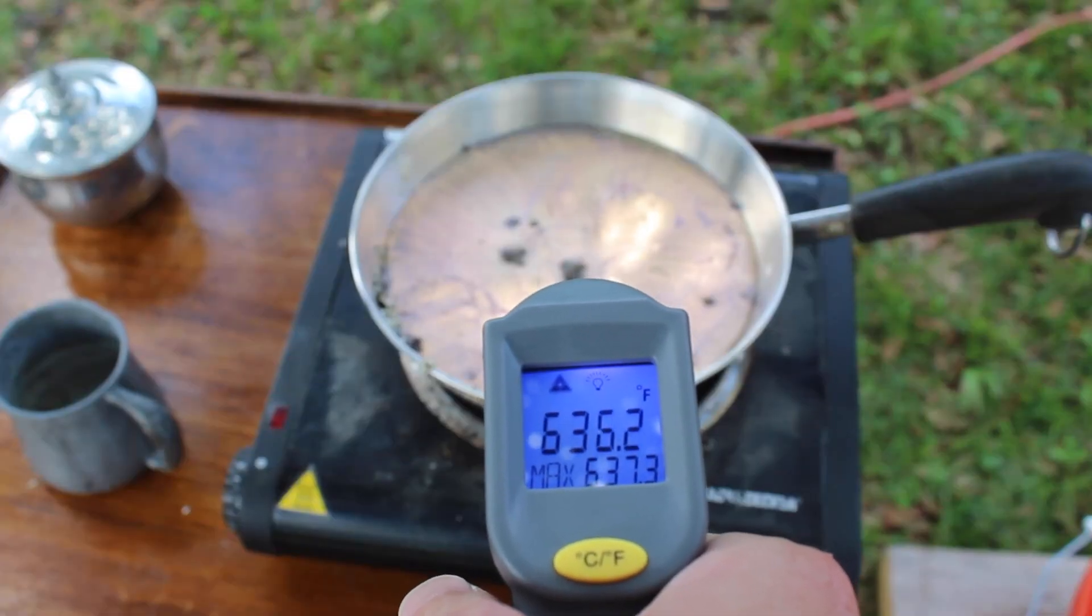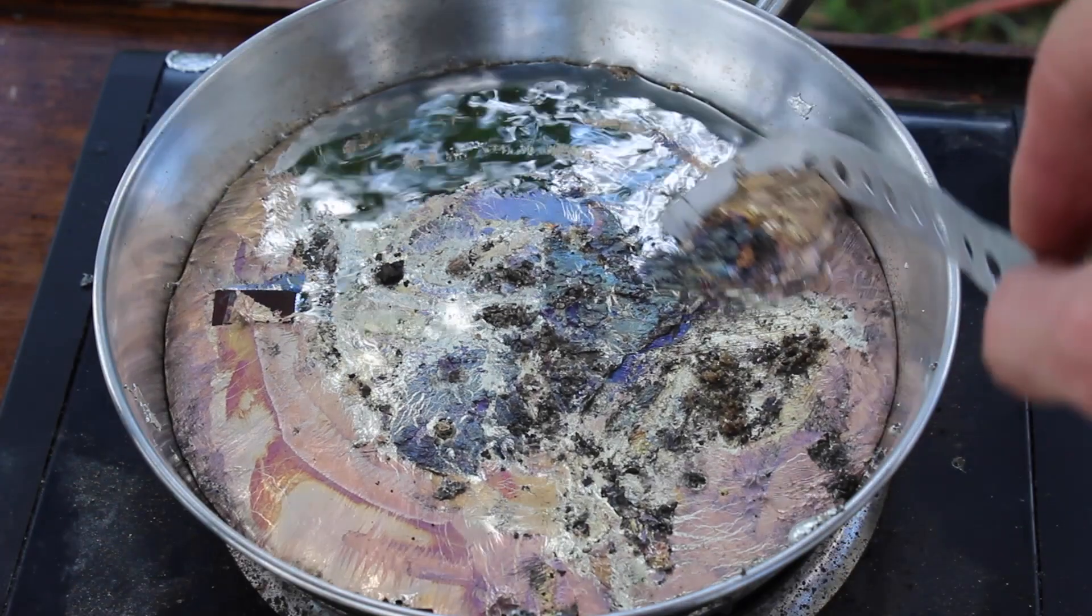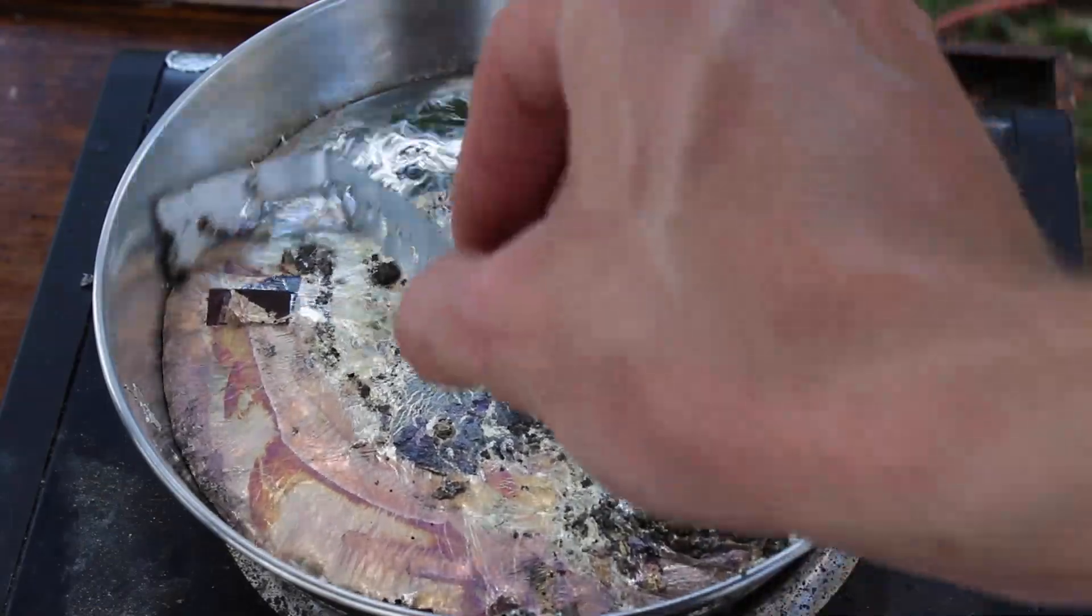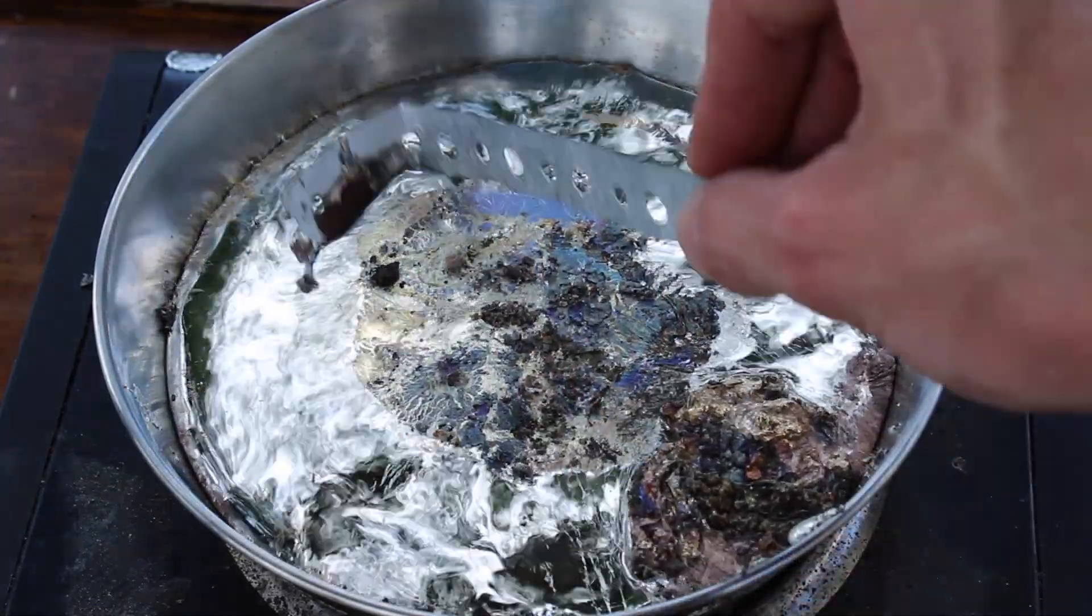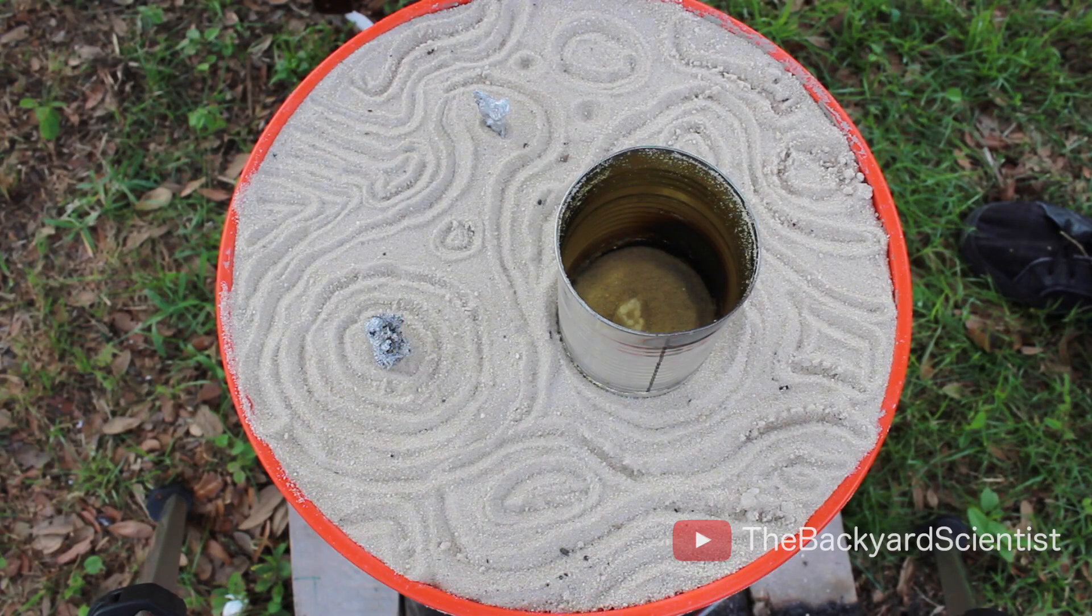I raise the pewter to over 600 degrees Fahrenheit which is the perfect temperature for casting. First we need to remove the old slag layer on top. And then it's time to pour the mold.